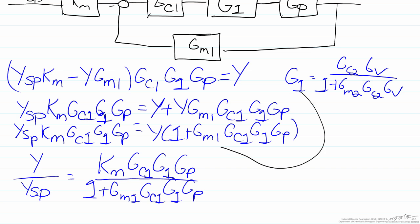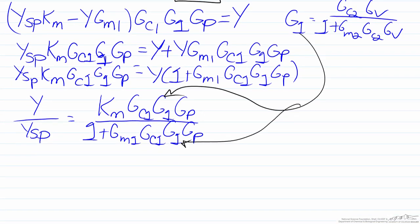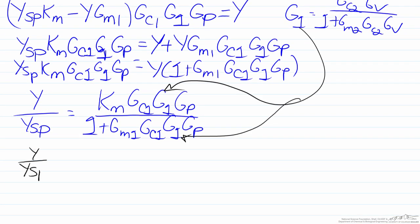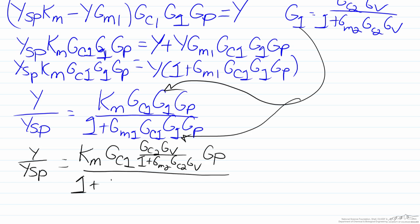What we now want to do is substitute in G1 here and simplify this a bit. So when we do this we will have that y over ysp will equal Km times Gc1 multiplied by Gc2 Gv divided by 1 plus Gm2 Gc2 Gv multiplied by Gp divided by 1 plus Gm1 Gc1 again multiplied by Gc2 Gv divided by 1 plus Gm2 Gc2 Gv and this will be multiplied by Gp.